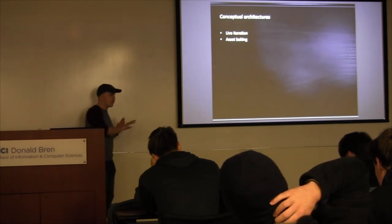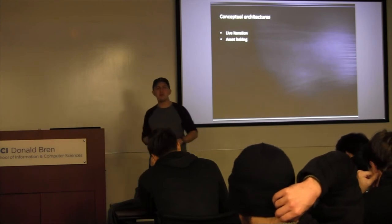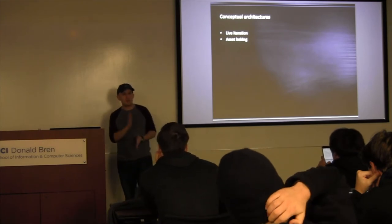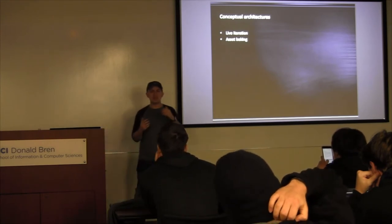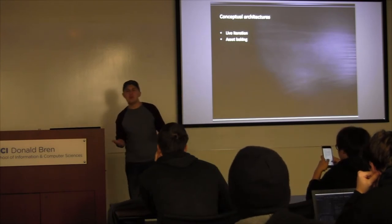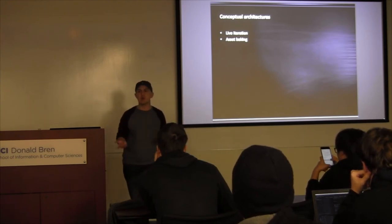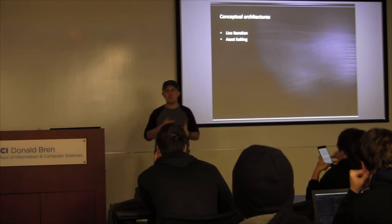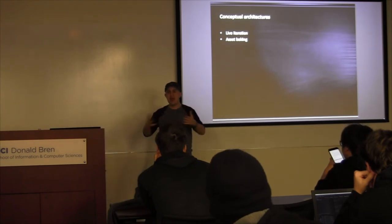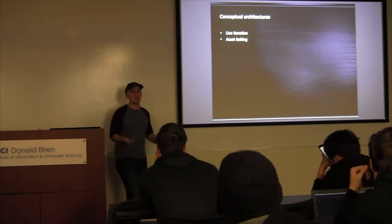Conceptual architectures divide into two categories: live iteration workflows and asset baking workflows. In live iteration — like working in Unreal Engine's editor and playing the game — you get instant results but have the problem of transients: your game state can become corrupt, or you can encounter irrecoverable errors. Also, when you make a change in-game, you need to somehow reflect that change back into your source data, which can be quite complex. Asset baking is the opposite: you use an offline tool to cook or prepare your data.